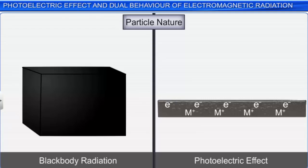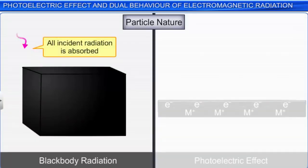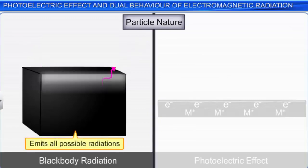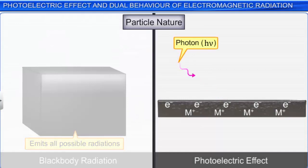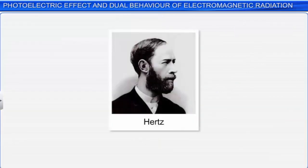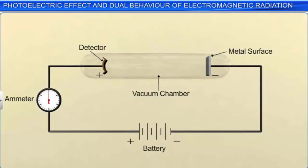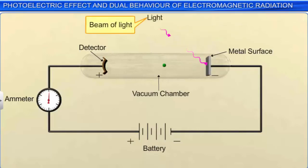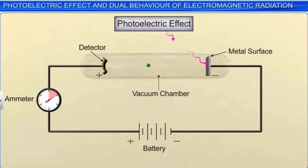Now let us look at the photoelectric effect, which is also explained on the basis of particle nature. In 1887, Hertz performed an experiment in which he observed that when the surface of certain metals — such as cesium, potassium, sodium, rubidium, and so on — are exposed to a beam of light, electrons were ejected. This is called the photoelectric effect. The electrons thus emitted are called photoelectrons.